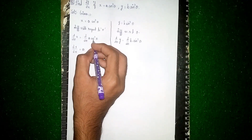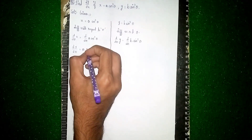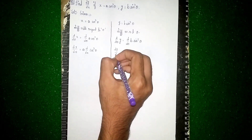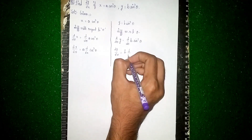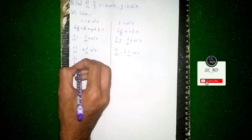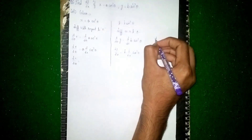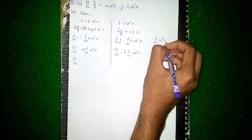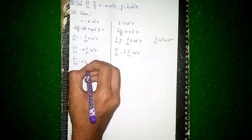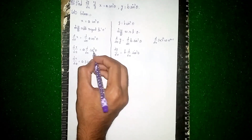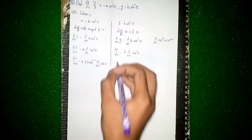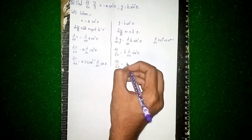We apply the power rule: d/dx of xⁿ = n·xⁿ⁻¹. Here n = 3, so dx/dθ = a · 3 · cos²θ · d/dθ(cosθ). The derivative of cosθ is −sinθ. So dx/dθ = a · 3 · cos²θ · (−sinθ) = −3a·cos²θ·sinθ. This is equation one.